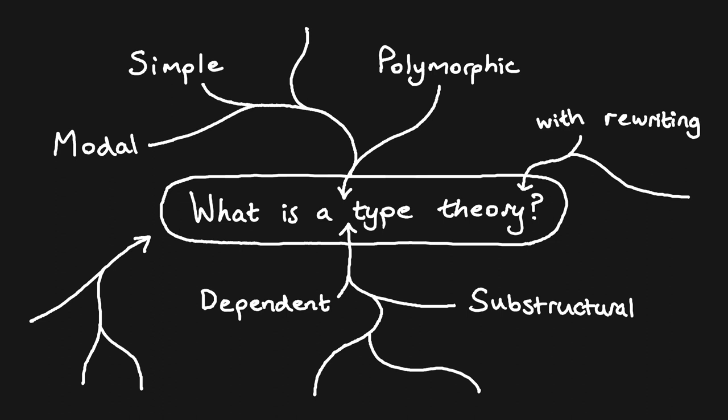There are many different families of type theories — for instance, we have simple type theories, polymorphic type theories, dependent type theories, substructural type theories, and so on. This is by no means a complete list, and the categories aren't disjoint either. We could very well consider combinations like polymorphic dependent type theories.